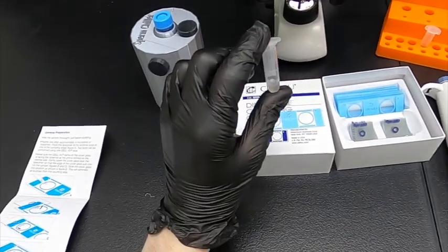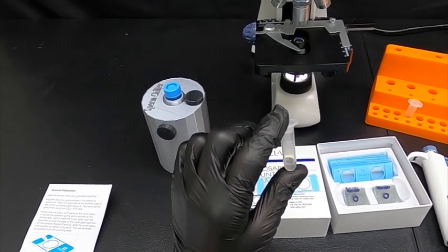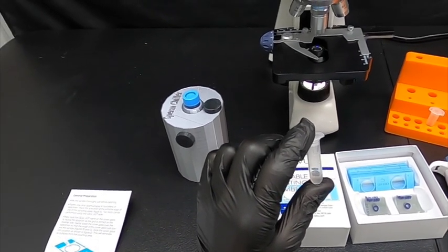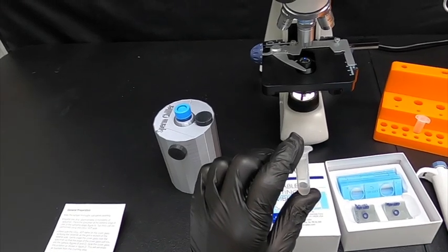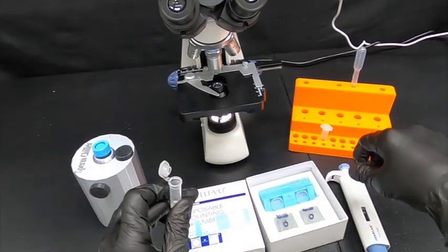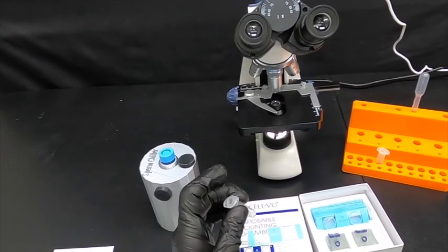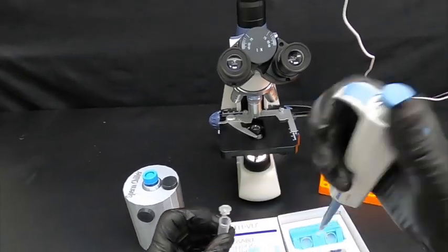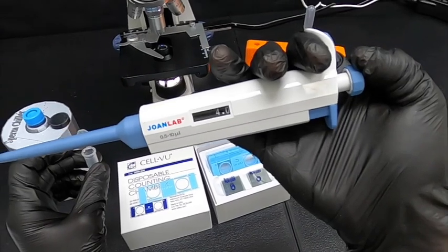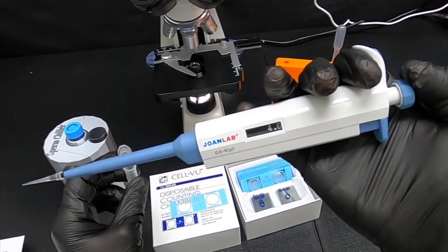We're back. We managed to kill off the semen in the sample to get an accurate concentration count. Again, we can't look at motility in percentage format with this test; it's just for concentration. As indicated in the instructions, we'll first mix it by gentle inversion or brief vortexing and set our mechanical pipette to four microliters. A little bit plus or minus is okay, but let's keep it as close to four as possible.